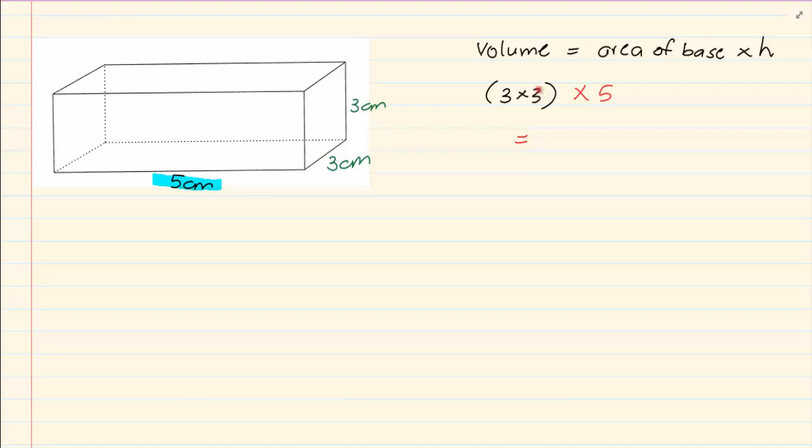Now 3 times 3 is 9. 9 times 5 is 45. And then I am saying centimeter cubed. Now why cubed? Because we are using 3 dimensions. The length, the breadth and the width. Can you see? So it is 3 dimensions unlike area where we only use the length and the breadth.